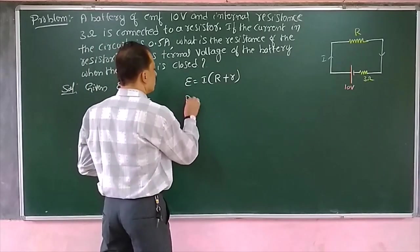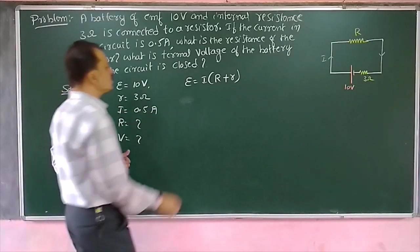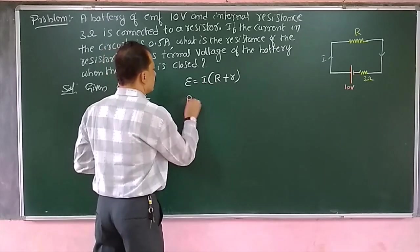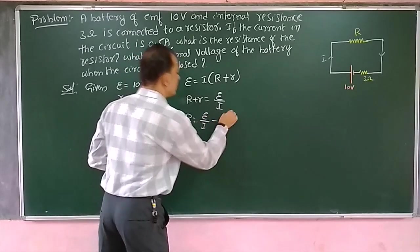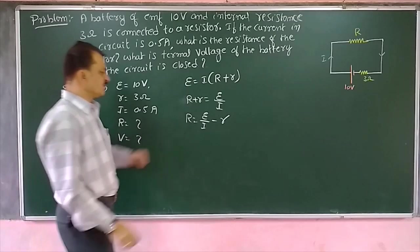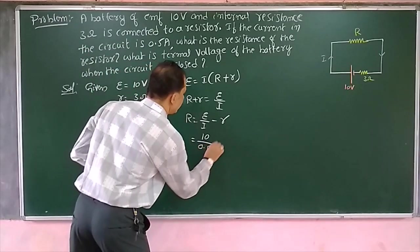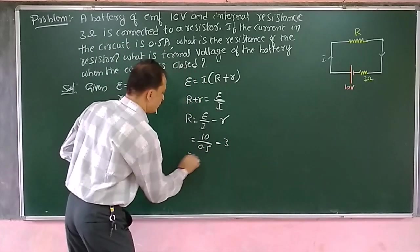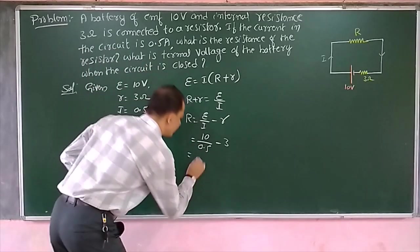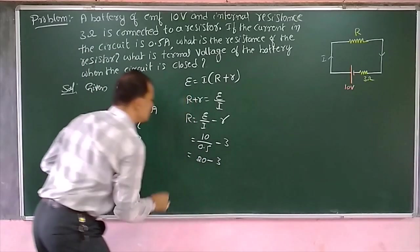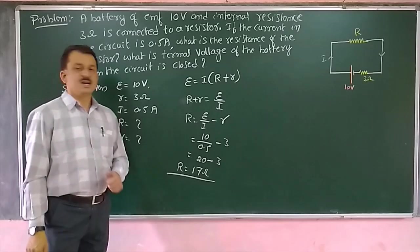Therefore, substituting the values to find the value of R: R plus r equals E by I, so R equals E by I minus small r. That is the formula. Now EMF is 10, current is 0.5, so 10 by 0.5 — I can write it as 100 by 5 — I will get 20 minus 3. Therefore R is equal to 17 ohms. This is the value of the external resistance.